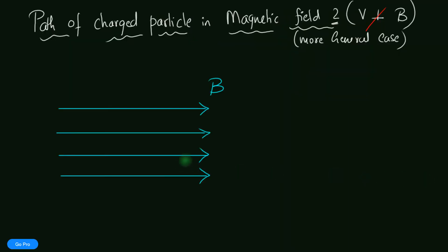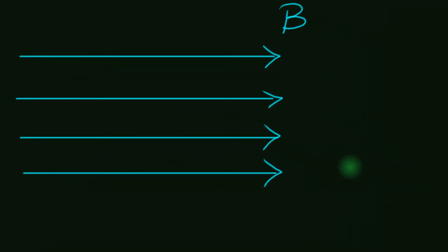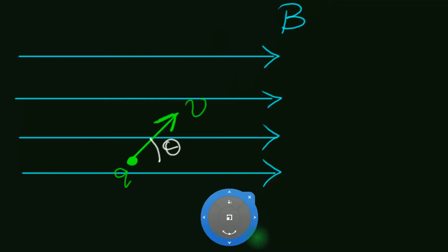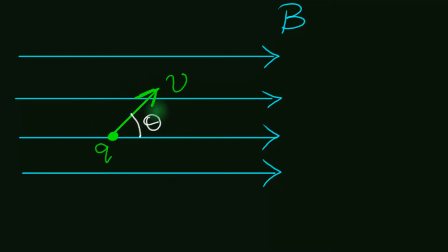We are considering a more general case — what happens if V has any random angle with respect to B? We already considered the perpendicular case last time. Here is our magnetic field, directed towards the right, uniform. Let's consider a charged particle Q moving with a velocity V making an angle theta. The question is, how will this charged particle move?